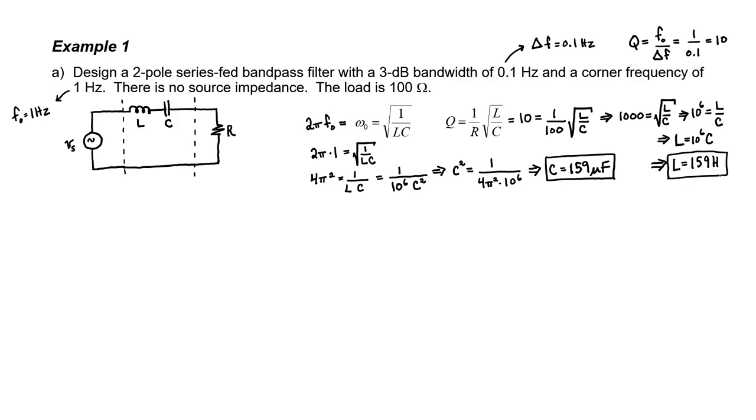We can then very easily determine that the inductor is 159 henries. Take a look at the size of these components — they're both really large, especially the inductor. Why are the values so large? Well, if we look back at the problem, we see that the corner frequency was only 1 Hz. That's a really low frequency, and generally low frequencies result in big components.